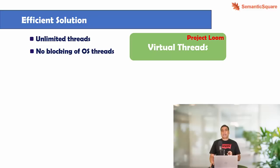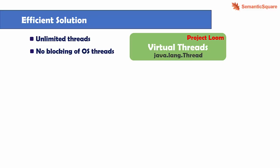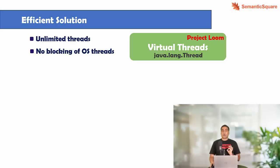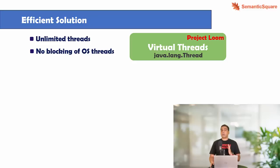Virtual threads, as the name suggests, are virtual — they are not real threads like OS threads. They are simple lightweight Java objects, but they are still instances of the java.lang.Thread class. The Thread class represents platform threads which are simple wrappers around OS threads, meaning there is a one-to-one correspondence between a platform thread and an OS thread.